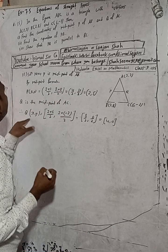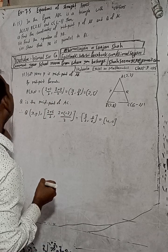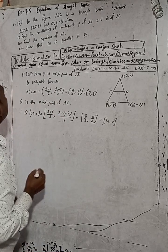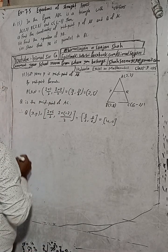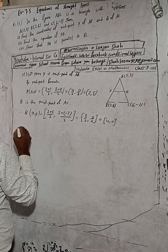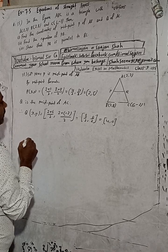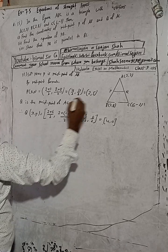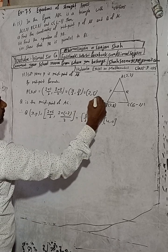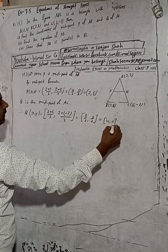So we have found the coordinates of both P and Q. Therefore: P = (2, 5) and Q = (4, 0). These are the required coordinates.